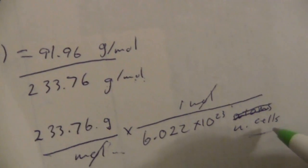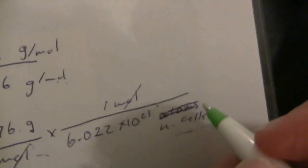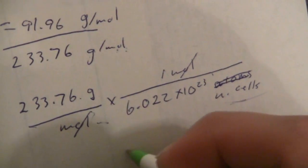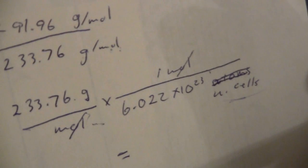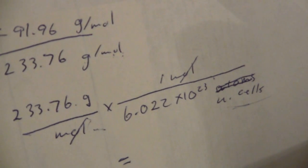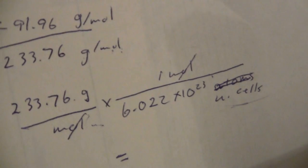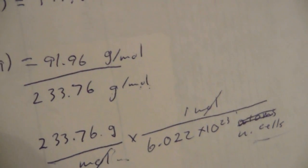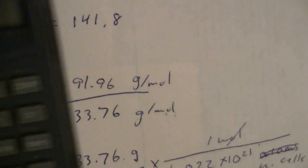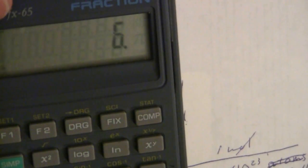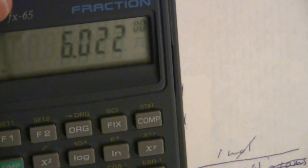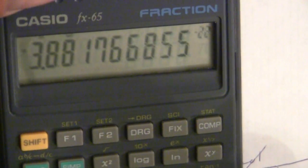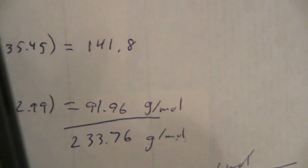And this will give us grams per unit cell. So, this value here will be, let's see here, we get 233.76 divided by 6.022 exponent 23, and you get 3.88 times 10 to the negative 22.